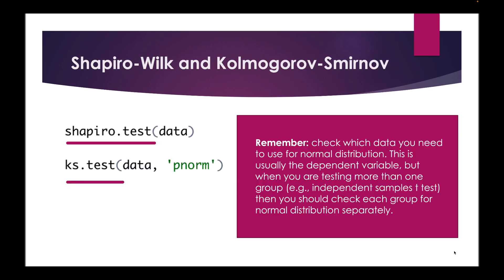The final way to check for normal distribution is using actual statistical tests: the Shapiro-Wilk test and the Kolmogorov-Smirnov test. In R we use the shapiro.test function or the ks.test function. You type the function and in brackets specify your data. For the KS test you also need to add "pnorm" in quotation marks. Remember, we are looking for p-values greater than 0.05 — non-significant — to show that our data is normally distributed. If your p-value is significant, this indicates that your data is not normally distributed.